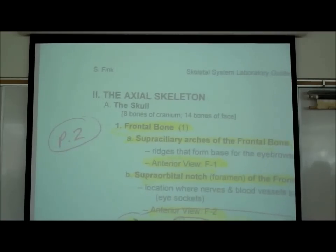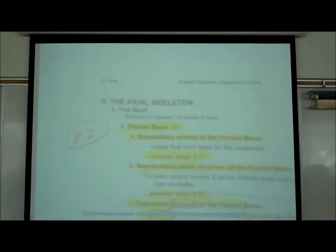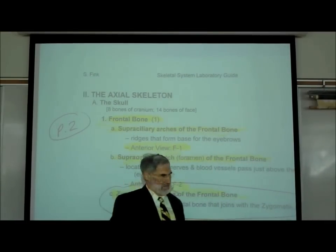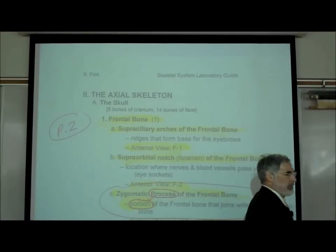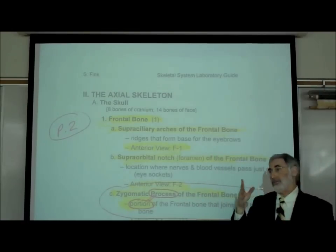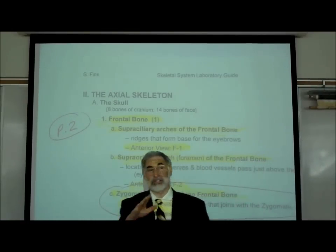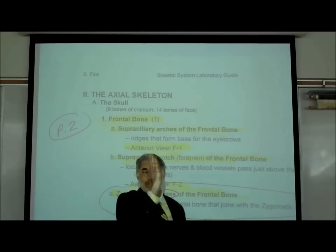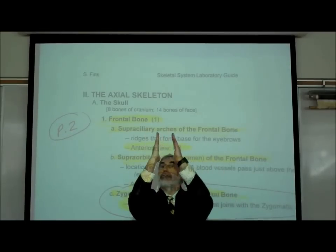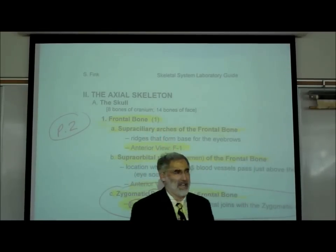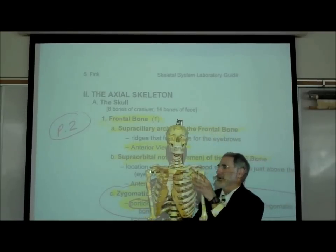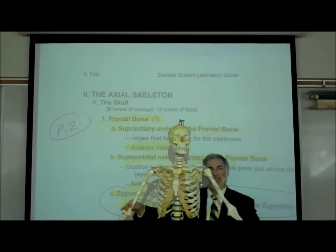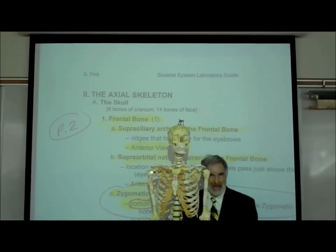Page two of the 22-page handout covers the axial skeleton. When we introduced the skeletal system, we divided it into two divisions: the axial skeleton, which forms the vertical axis of the body — the skull, vertebral column, and ribcage — and the appendicular skeleton, which includes the appendages, the arms and legs.